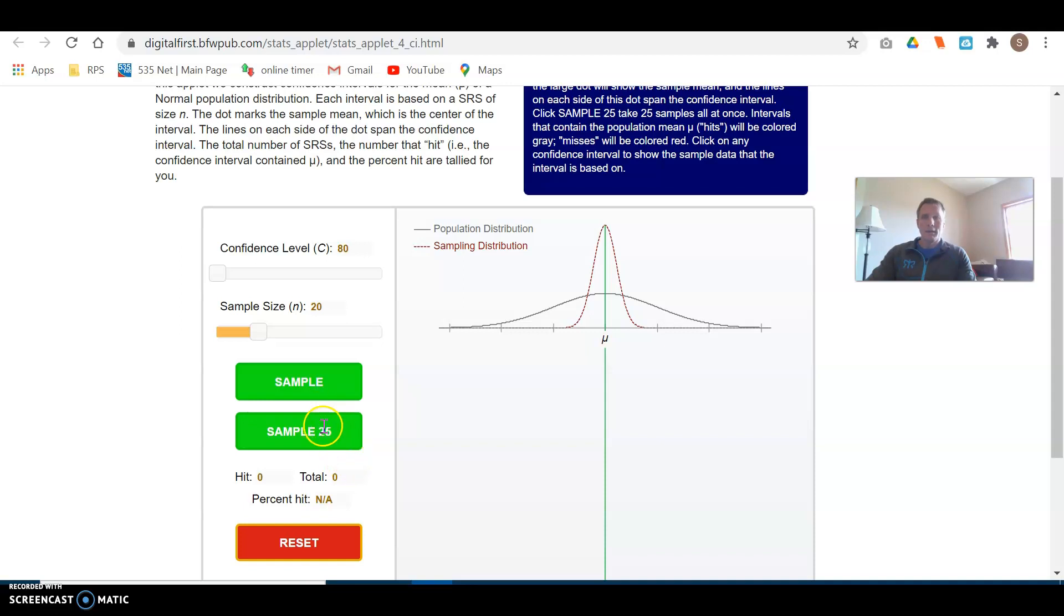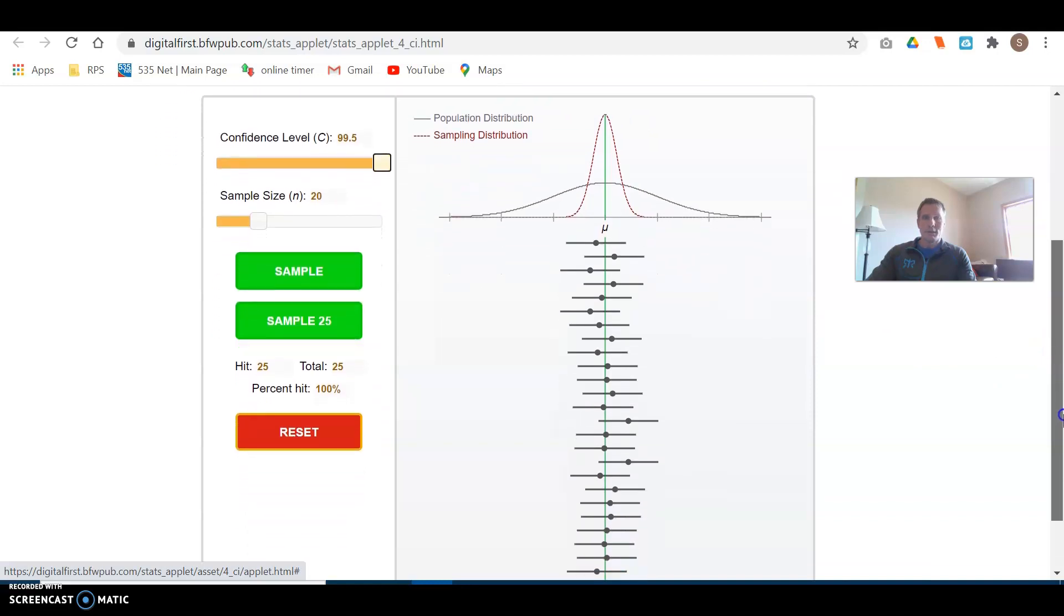But you tend to miss the true population parameter quite often. On the other hand, if you go with a very high confidence level, you can see as I increase it, we're getting wider intervals. We're more likely to capture the true parameter. So here, 99.5% confident means if I repeat this same